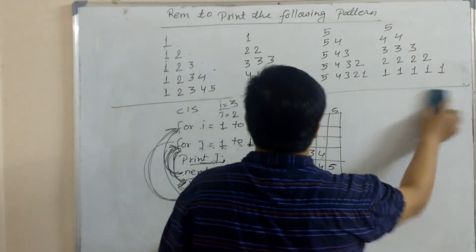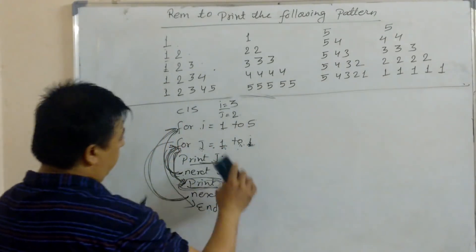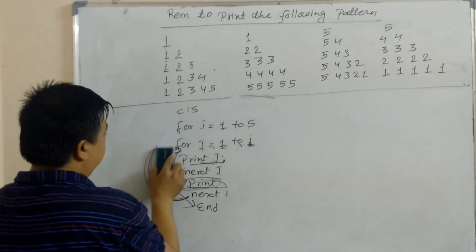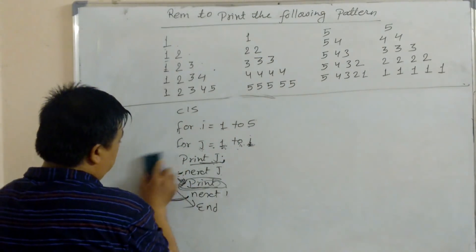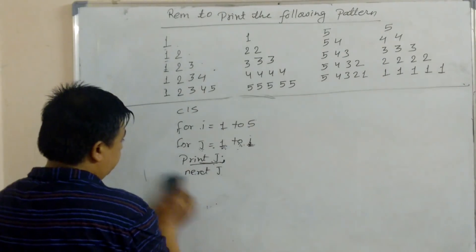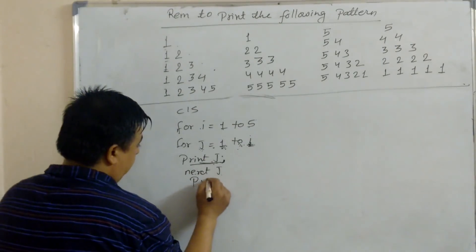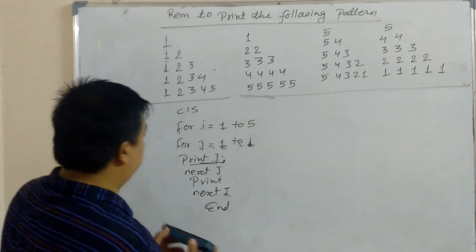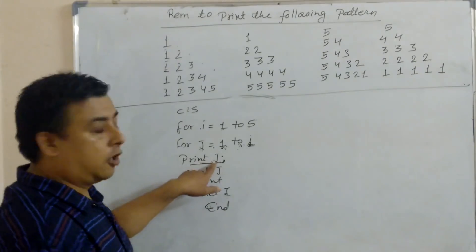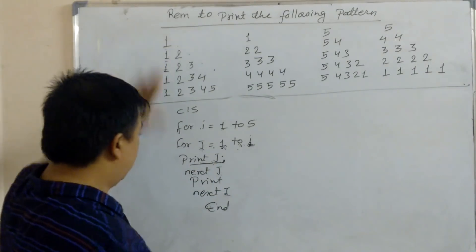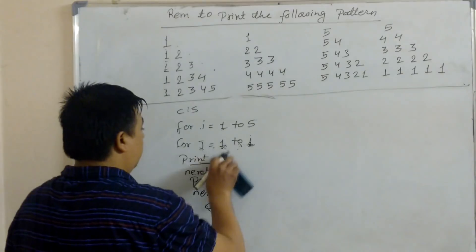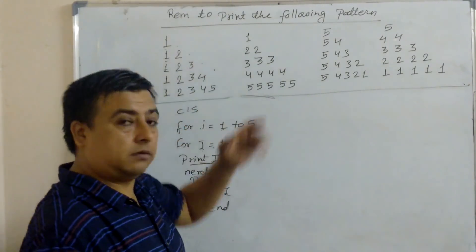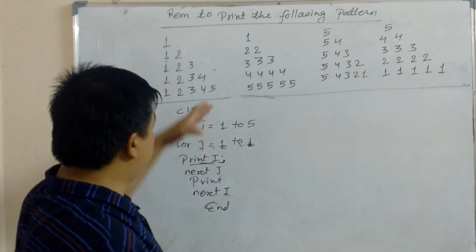The second pattern is the easy one. If you know the first, the second becomes very easy. Because if we print the outer loop — that is, print I instead of J — it gives this different type of pattern: instead of counting up within each row, the same number repeats in the same line.